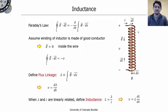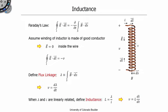Let's consider this simple inductor formed by coiling a wire. In order to determine the terminal relationship — the V-I relationship — for this coil, we will need to apply Faraday's law. Let's recall what Faraday's law states. Faraday's law states that the integral of the electric field around a closed loop — let's say we have a loop L and we define its direction to be clockwise.